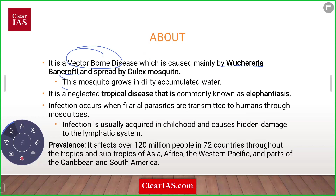It is spread by the Culex mosquito. In areas where the Culex mosquito population is high, there is a greater chance of heavy transmission from person to person, because the parasite Wuchereria bancrofti is transmitted by this mosquito. The Culex mosquito breeds in dirty, accumulated water.